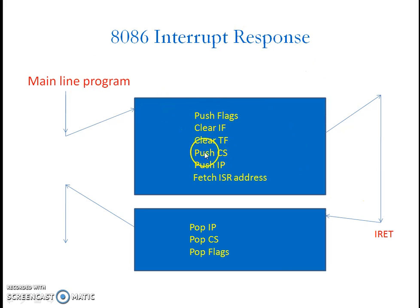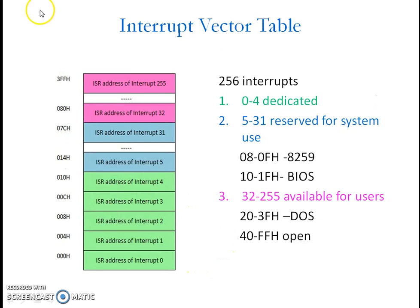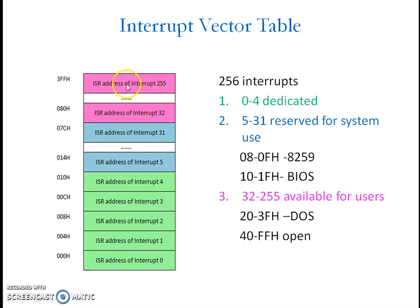In summary, the 8086 clears the IF flag, clears the TF flag, pushes CS and IP, and pops them back when returning. Coming to the interrupt vector table of the 8086 microprocessor, it is a table which holds the starting addresses of 256 interrupts — meaning the 8086 has provisions to store 256 interrupt service routine addresses. The ISR address for type 0 interrupt is stored at location 00H, and the vector for interrupt type 255 is stored at location 3FFH. This means starting addresses for all interrupt service routines are stored in these locations, totaling 256 ISR addresses in 1K bytes of memory reserved for this purpose.